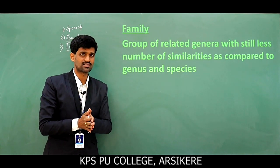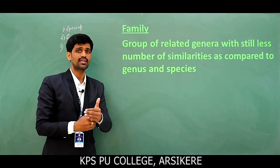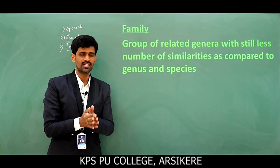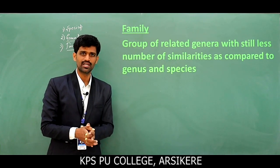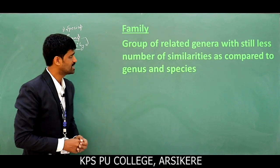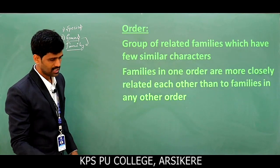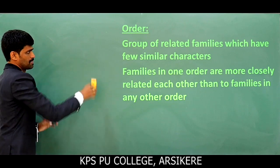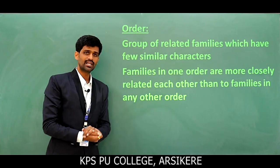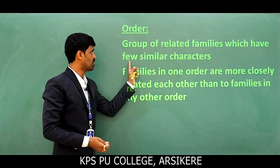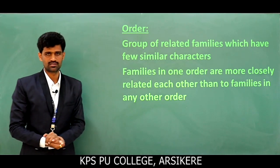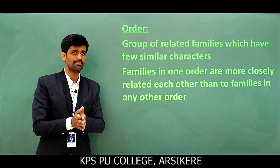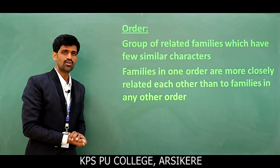In this class, we will discuss the remaining part of the hierarchy of classification. The next content is, after the family, the next one is order. The group of related families which have few similar characters are considered as order.